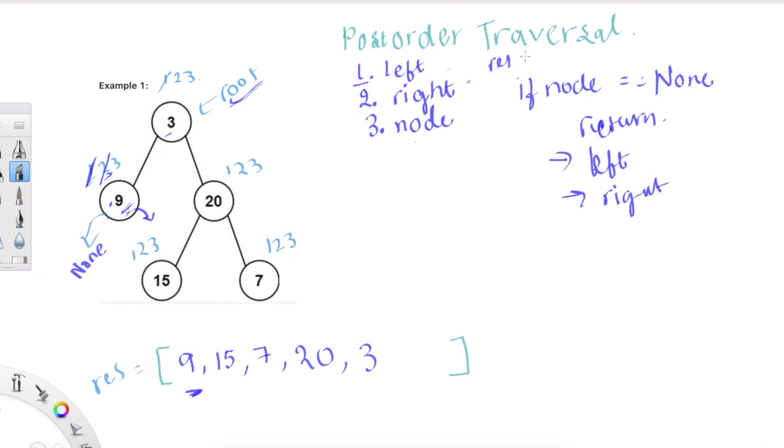And then lastly we will have a result list here that we're going to populate. So we are going to finally, after we've navigated all the left and all the right, then only we are going to add this value to our result. So we will add this value. We can say res.append and we will put in our node's value that we're currently on, node.val.